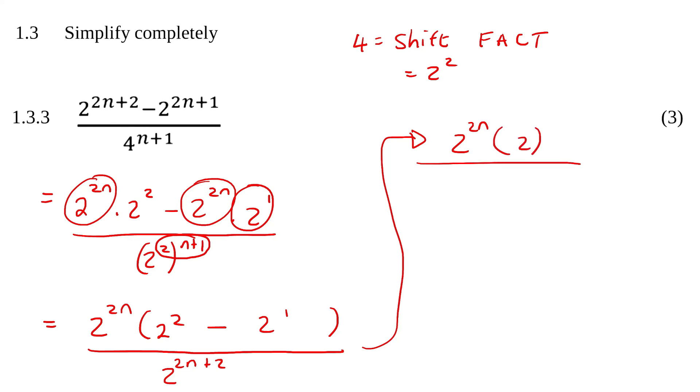Then at the bottom, I could split this up to become 2 to the 2n times by 2 to the 2. The reason I did that is so that these 2 to the 2n's can now cancel each other out. And so what I'm left with now is 2 over 4, because this just becomes 4.